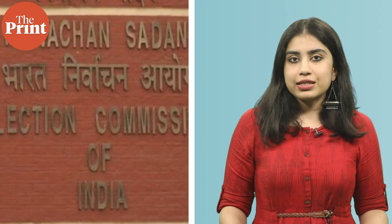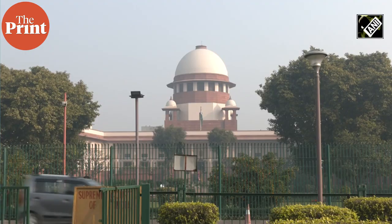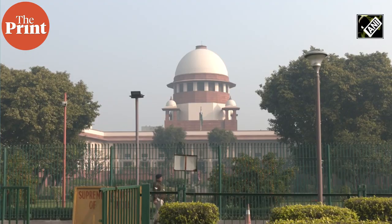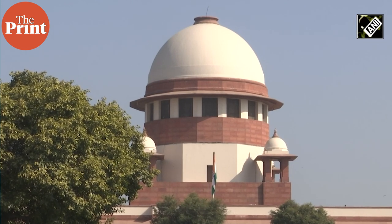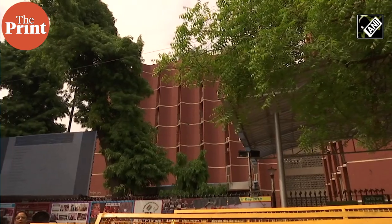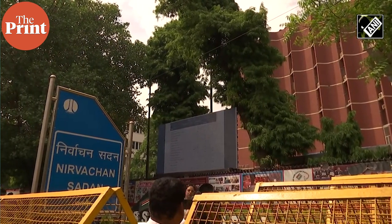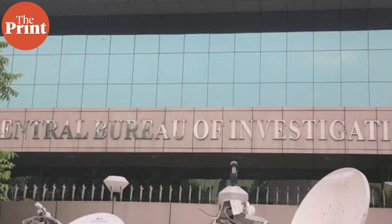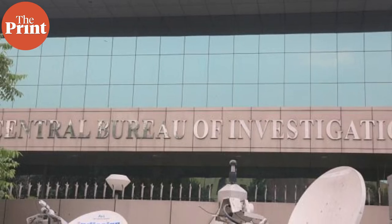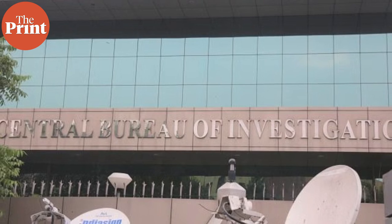The Supreme Court has stepped in to declare that the President will appoint the Chief Election Commissioner and the Election Commissioners on the basis of advice given by a committee comprising the Prime Minister of India, the Leader of Opposition in the Lok Sabha, and the Chief Justice of India. This procedure will continue till the Parliament actually comes up with a law on the subject, meaning Parliament can undo the effect of the judgment by bringing in a law. The new process is very similar to the one that chooses the Director of the CBI, the Central Bureau of Investigation.